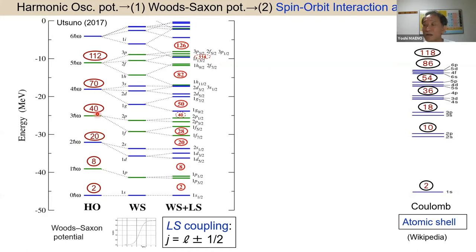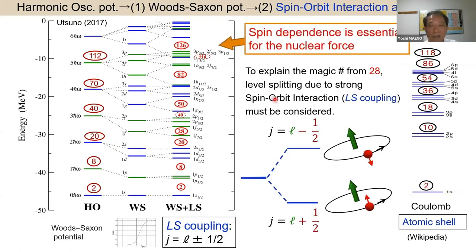You cannot explain 28 with a harmonic potential alone. Adding a more realistic Wood–Saxon potential with splitting of s and f orbitals is better, but still cannot explain 28. Finally, Mayer and Jensen introduced a very strong spin-orbit interaction, splitting the 1f orbital into two levels — j = l + 1/2 and j = l − 1/2. This then explains 28 as well as 50 and 82.